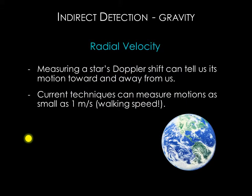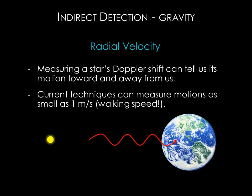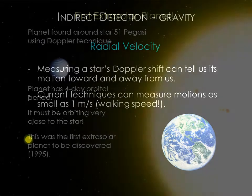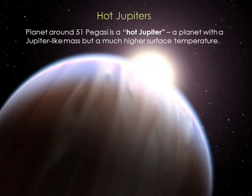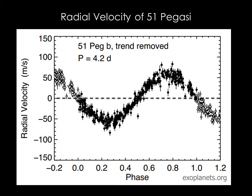The radial velocity technique also looks for the gravitational tugs of planets around stars. The Doppler effect allows us to measure the velocity of a star toward or away from us. When the star is moving toward us, the light is blue shifted; when it is moving away, the light is red shifted. This technique can measure motions as small as one meter per second — basically walking speed. The Doppler method was used for the first discovery of an extrasolar planet around a Sun-like star in 1995. This planet has a four-day orbital period and is eight times closer to its star than Mercury is to the Sun. At distances this close, the planet must be very hot. The planet orbiting 51 Pegasi is known as a hot Jupiter — a planet with a Jupiter-like mass but a much higher surface temperature.